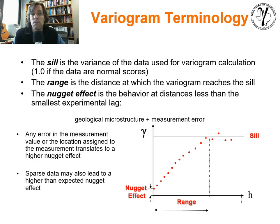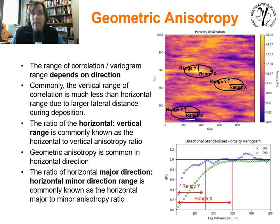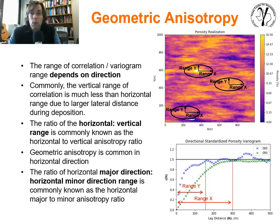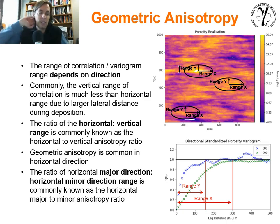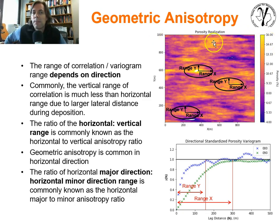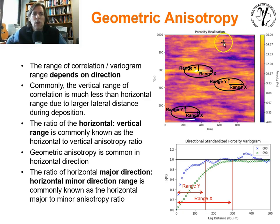Let's get into much more depth around variogram interpretation. Geometric anisotropy is critical for variogram interpretation and modeling. The idea is straightforward: the spatial continuity — the range of spatial continuity — depends on direction. If we look at this 2D spatial phenomenon, we have a field of porosities between 4% and 16%, and we can see pretty obviously that there is a greater degree of spatial continuity in the X direction than in the Y direction.